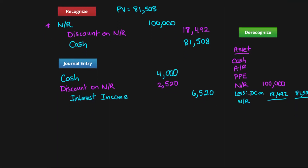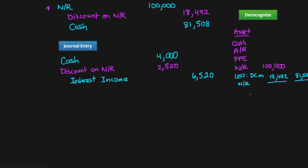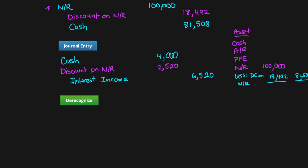We'll have six of these entries to report the interest, and then finally at the end we'll de-recognize the note. After six of these entries, the discount will be completely erased — because at the beginning it had a balance of eighteen thousand four hundred and ninety-two, and by the end of the six years it'll be at zero since we will have fully reversed it.